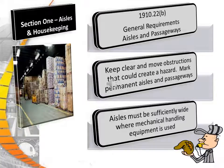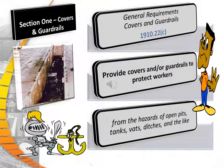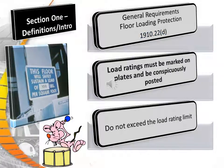.22b states general requirements for aisles and passageways, which are meant to keep clear and remove obstructions that could create a hazard. Mark permanent aisles and passageways, and aisles must be sufficiently wide where mechanical handling equipment is used. General requirements for covers and guardrails are covered under .22c, which provides for covers and guardrails to protect workers from the hazards of open pits, tanks, vats, ditches, and similar items. General floor loading requirements under .22d state that load ratings must be marked on plates and be conspicuously posted.